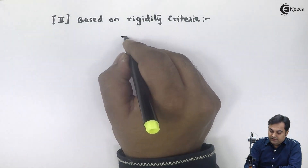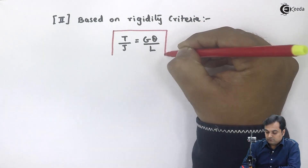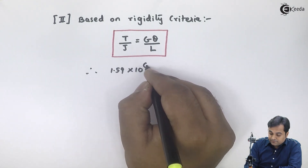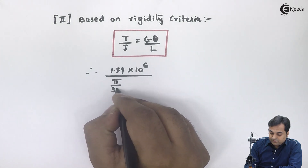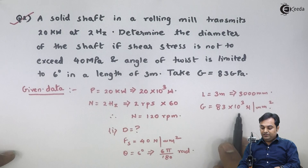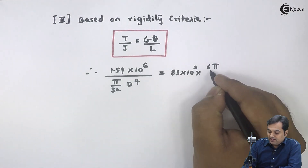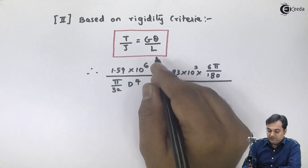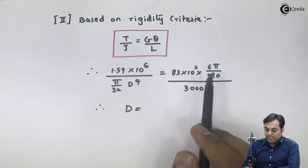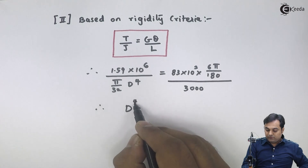Based on rigidity criteria, the formula is T/J = Gθ/L. Substituting: T = 1.59 × 10⁶, J = πD⁴/32, G = 83 × 10³ N/mm², theta = 6π/180 radians, and length L = 3000 mm. Shifting D⁴ to the right-hand side gives D⁴ = 5.60 × 10⁶.